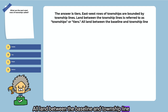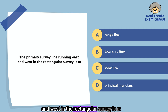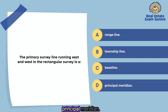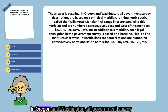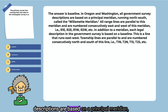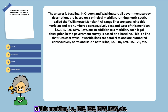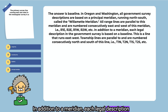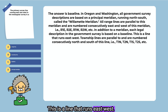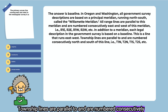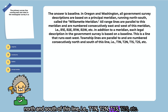The primary survey line running east and west in the rectangular survey is a: range line, township line, baseline, or principal meridian. The answer is baseline. In Oregon and Washington, all government survey descriptions are based on a principal meridian running north-south called the Willamette Meridian. All range lines are parallel to this meridian and numbered consecutively east and west — R1E, R2E, R1W, R2W, etc. In addition to a meridian, each legal description in the government survey is based on a baseline, a line that runs east-west. Township lines are parallel to and numbered consecutively north and south of this line — T1N, T2N, T1S, T2S, etc.